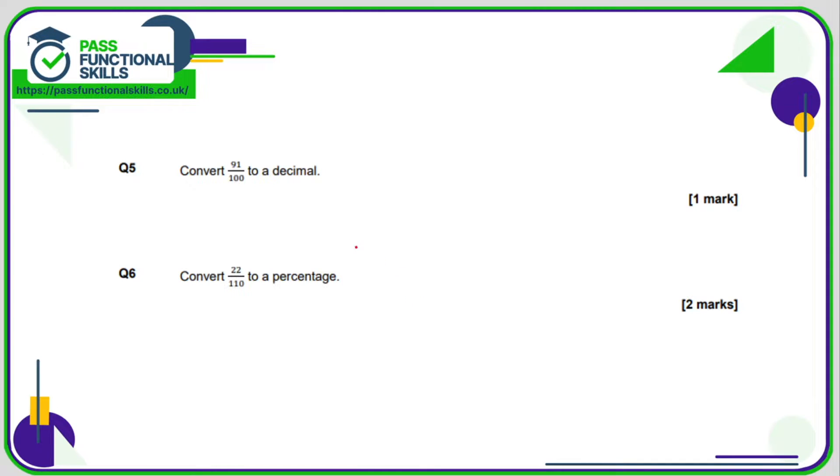Question number five. 91 hundredths to a decimal. Now when you've got a fraction out of 100 it's easy to convert it to a decimal. It's simply 0.91. When we're dealing in hundredths then that means we're going to have two decimal places. If it's tenths, one decimal place.